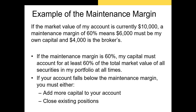For example, if the market value of your account is $10,000 and the maintenance margin is 60%, then $6,000 has to be your own capital and at most $4,000 could have been borrowed from the broker. If the value of your portfolio falls below $10,000 and you've borrowed $4,000, your margin will fall below the maintenance margin of 60%. When that happens, you have two choices: add more capital to your account or close your existing positions and liquidate your shares to repay your broker.